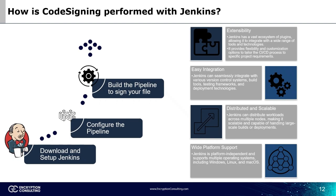Easy integration: Jenkins can seamlessly integrate with various version control systems, build tools, testing frameworks, and deployment technologies. Distributed and scalable: Jenkins can distribute workloads across multiple nodes, making it scalable and capable of handling large-scale builds or deployments. Wide platform support: Jenkins is platform independent and supports multiple operating systems including Windows, Linux, and macOS.